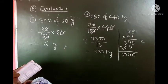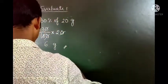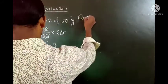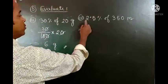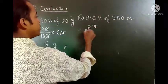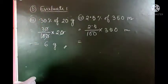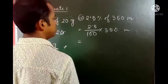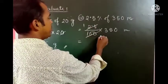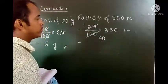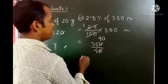Next: 2.5 percent of 350 meter. So 2.5 percent is 2.5 divided by 100 into 350 meter. We can write 2.5 as 25 by 10, so 25 divided by 1000 into 350. Simplifying: 350 divided by 40 gives 8.75 meter. So the answer is 8.75 meters.